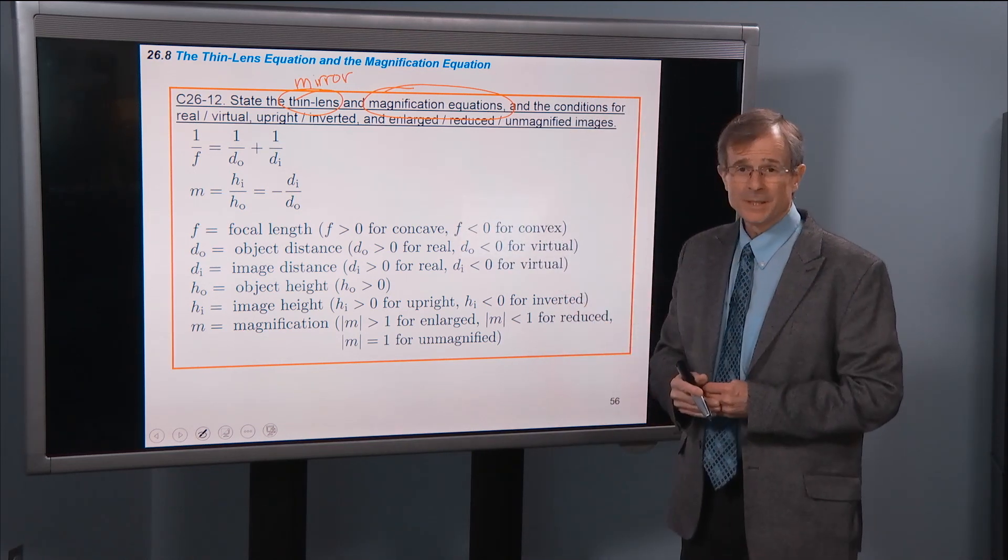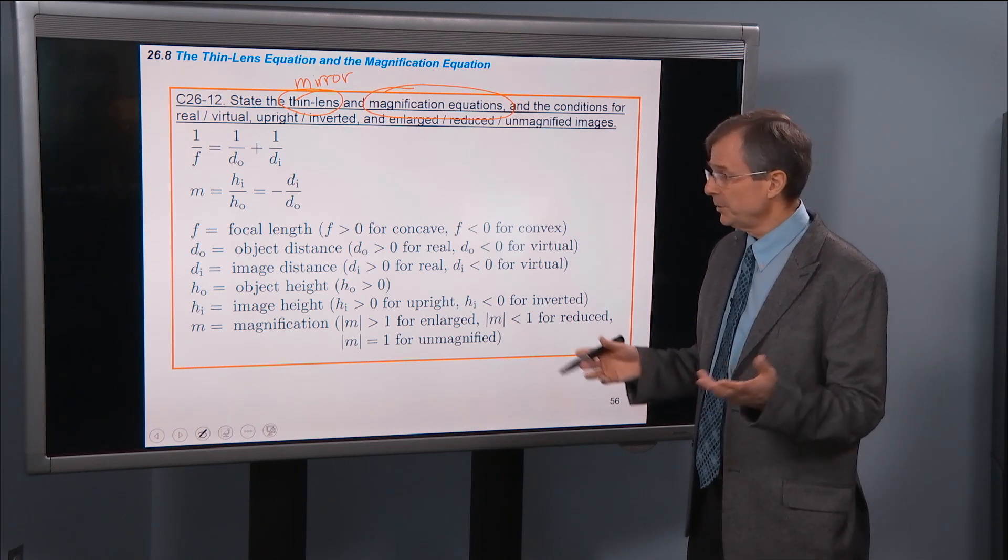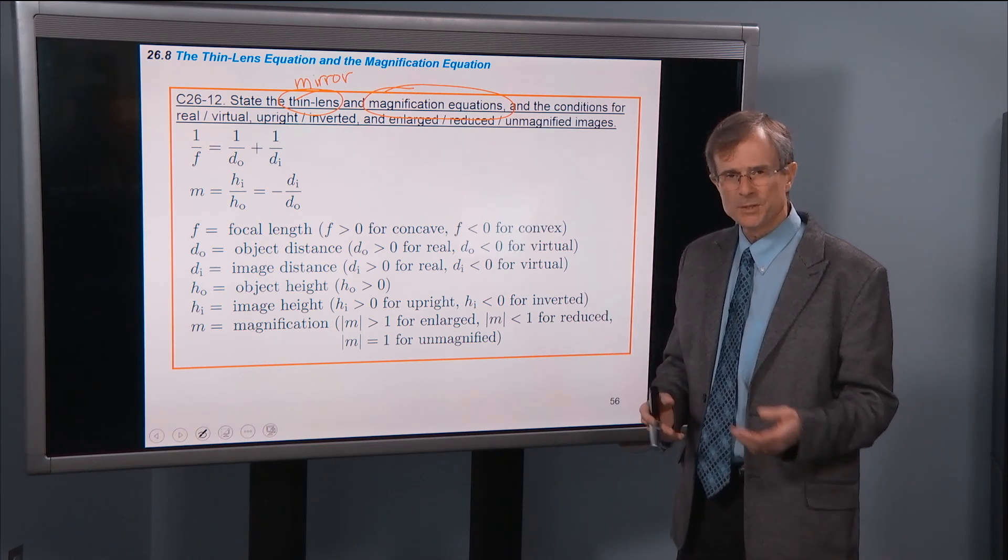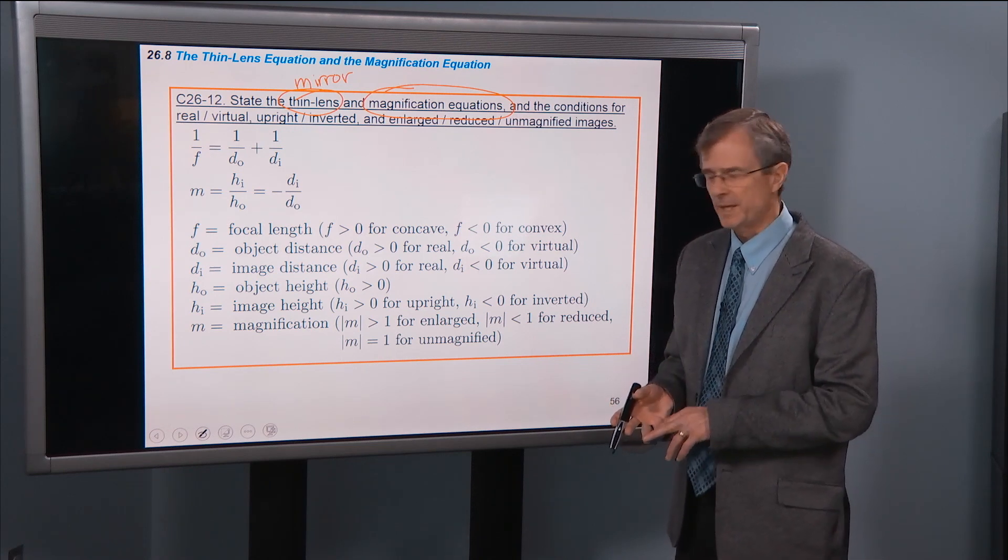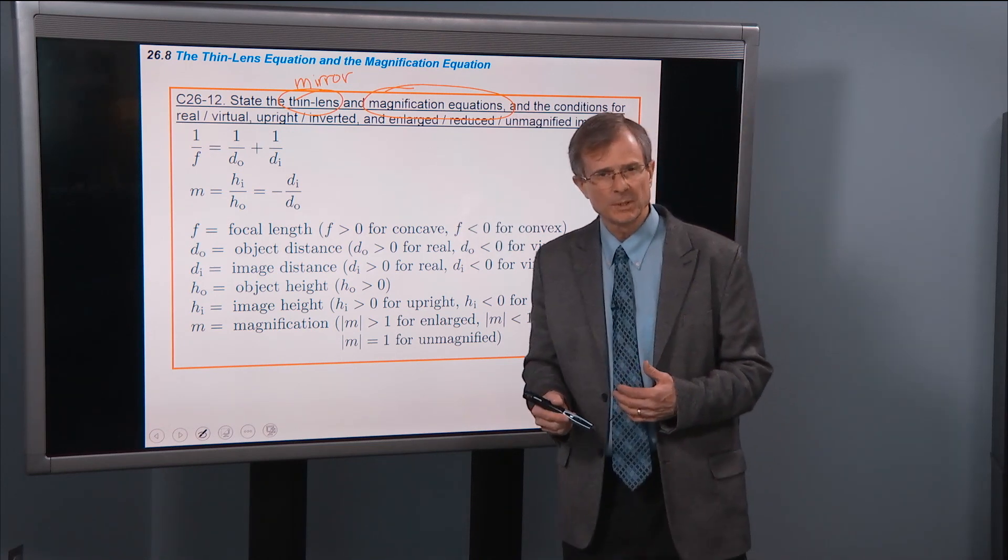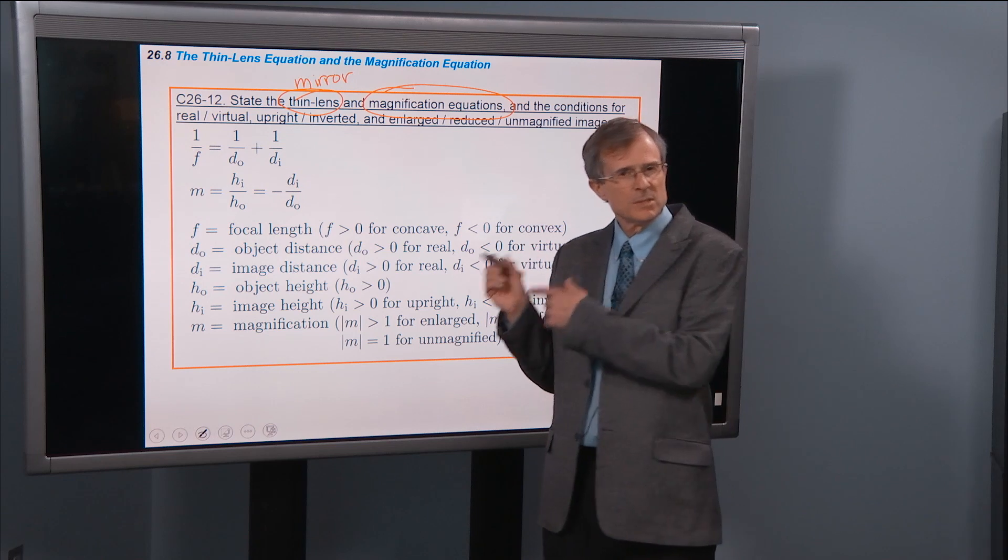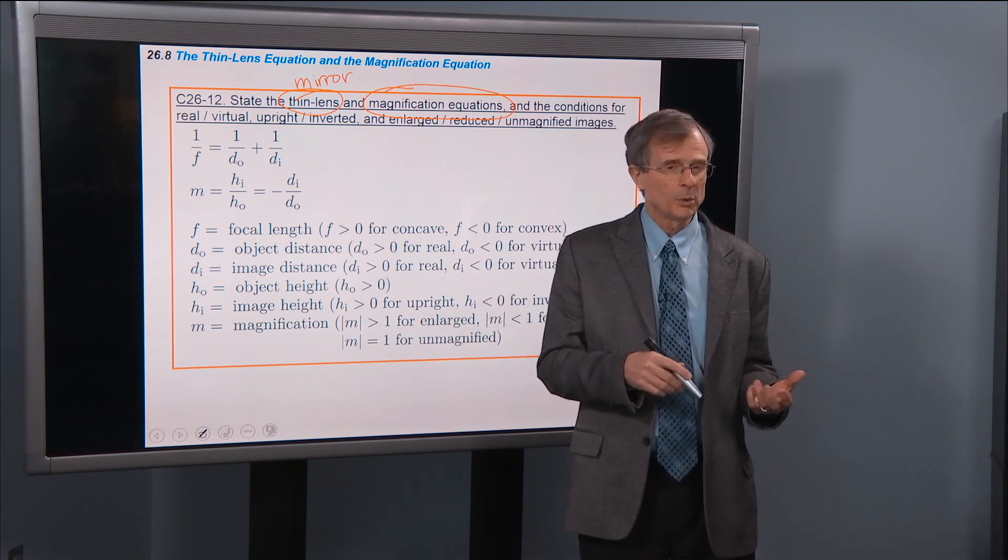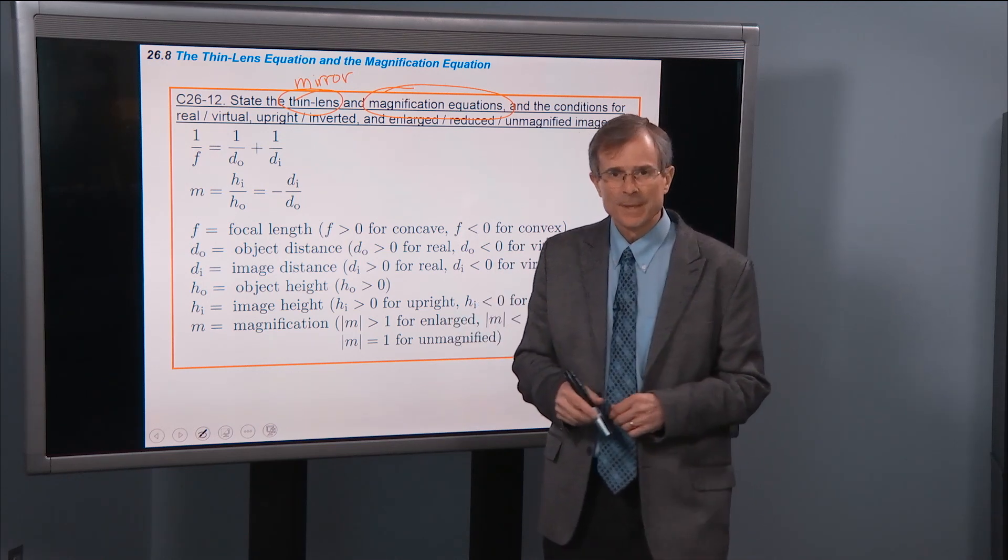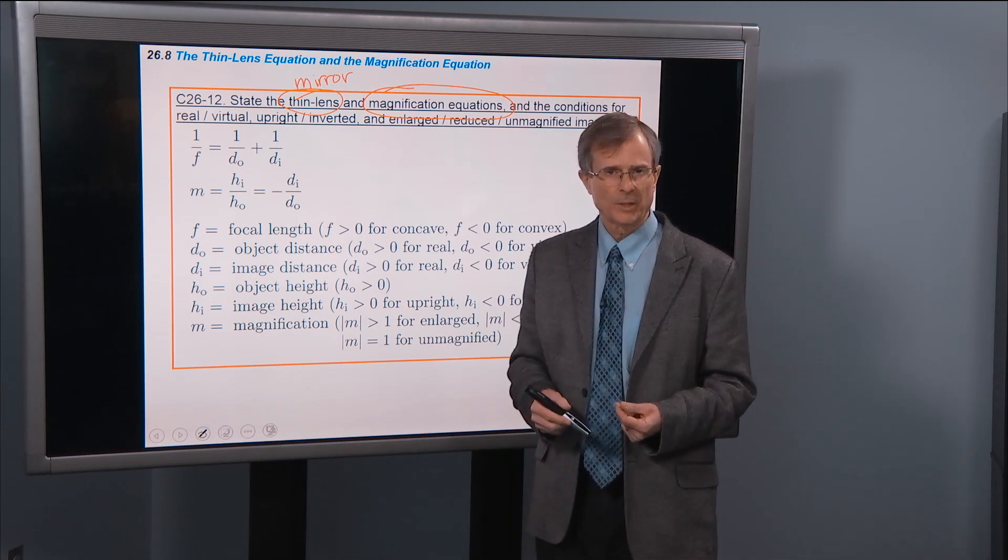These equations describe, you can use them to find the image, the position of the image if you know where the object is and the focal length. Or alternatively, as you will do in the lab, you can use these equations to figure out what the focal length of the lens is based on where the object and the image are located.